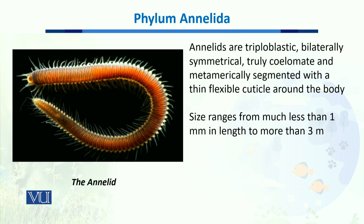Bilateral symmetry means the right side of their body is exactly like the left side. They are true coelomates, meaning they possess a true body cavity, and they are metamerically segmented with a thin flexible cuticle present around their body.